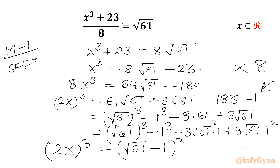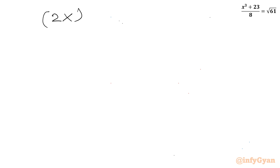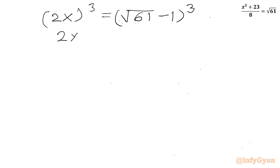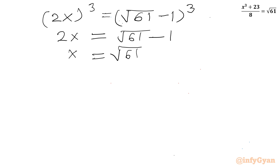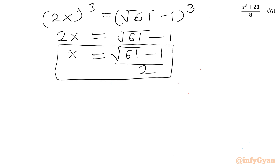Now we have (2x)³ = (√61 − 1)³. Since both sides are raised to the power 3, we take the cube root of both sides, giving 2x = √61 − 1, so x = (√61 − 1)/2.